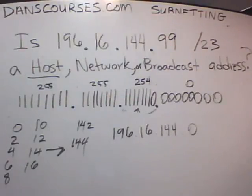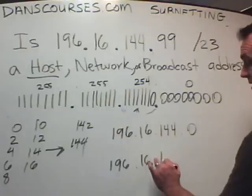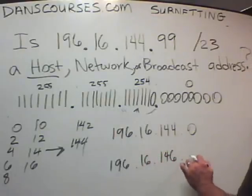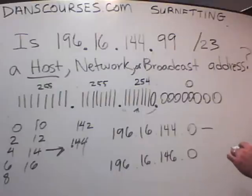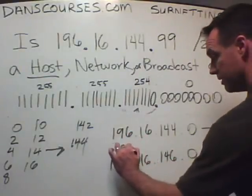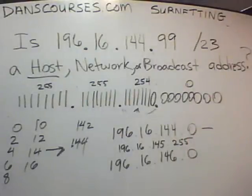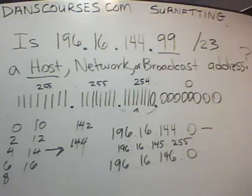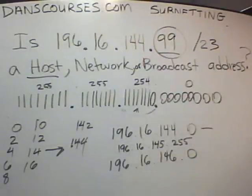That's going to be the network number, and it goes all the way up until it reaches the next network, which would be 196.16.146.0. So this network goes all the way up to 196.16.145.255 — that's the broadcast. So .99: is it the network number 144.0? No. Is it 145.255? No. It's in between those two, so it is a valid host address in this scenario.